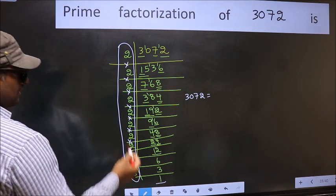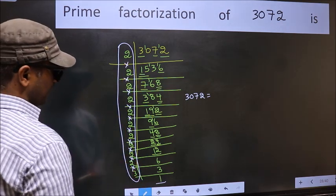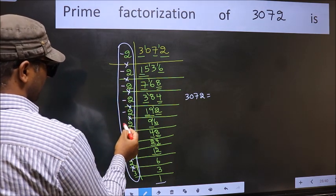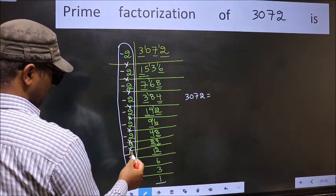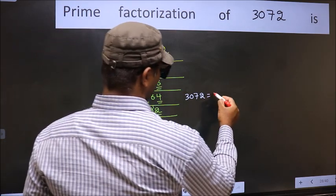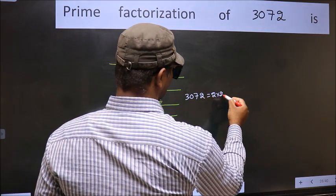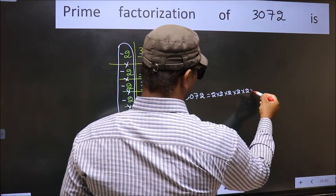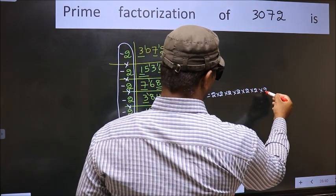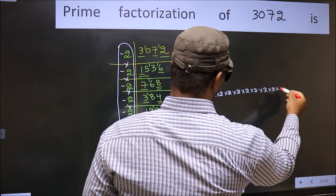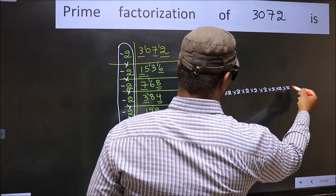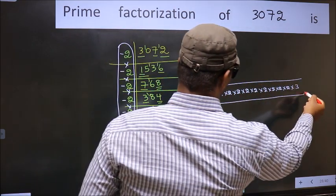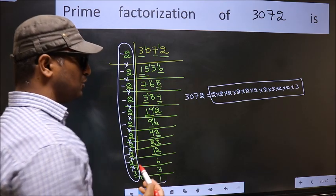That is — how many times did we get 2? 1, 2, 3, 4, 5, 6, 7, 8, 9, 10. So 2 times 2 times 2 times 2 times 2 times 2 times 2 times 2 times 2 times 2, and finally times 3. This is the prime factorization of 3072.